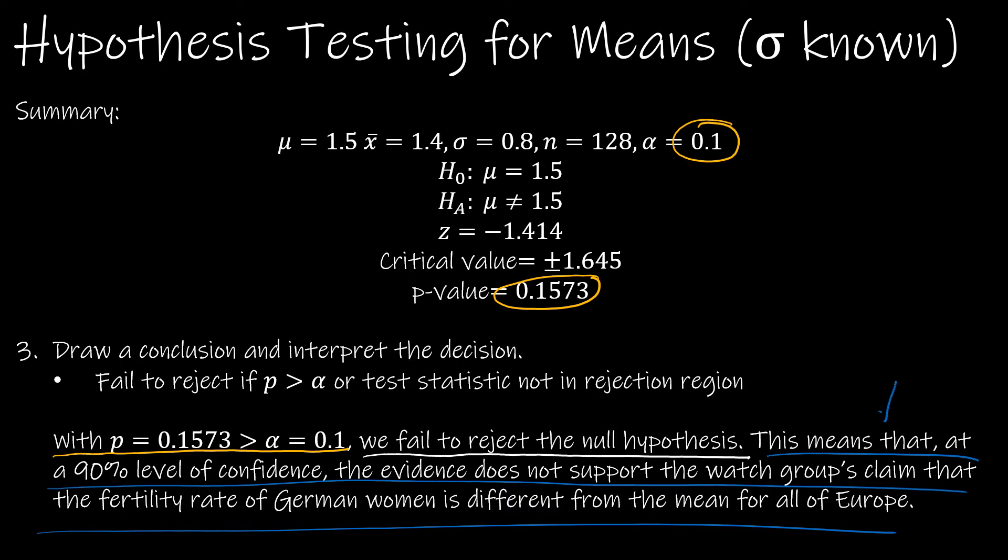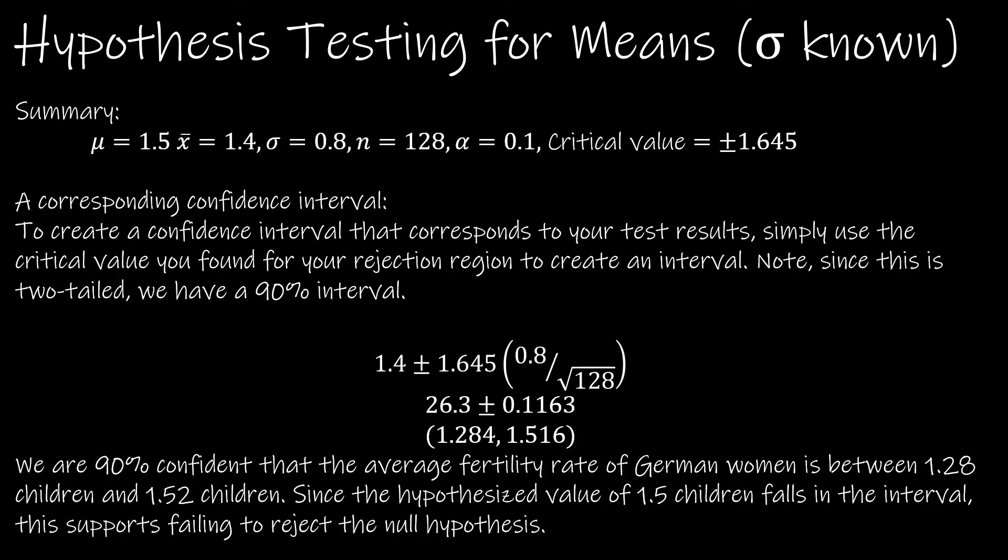So again, if you're still confused on this part, we always talk about the alternative hypothesis. If we fail to reject, we're saying there's not enough evidence to say this is true. If we reject, we're saying there is enough evidence to say the alternative is true.